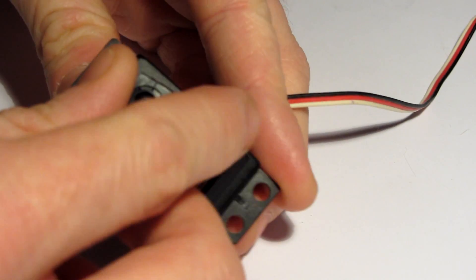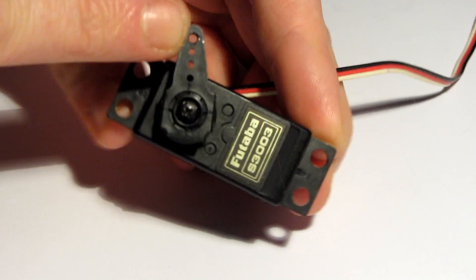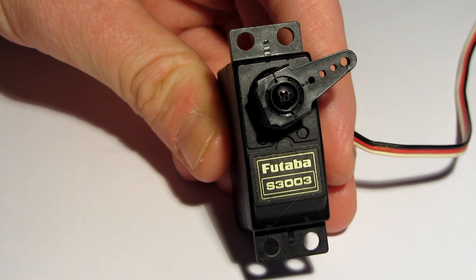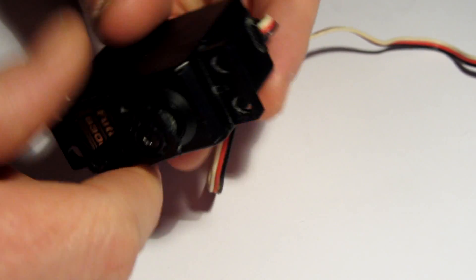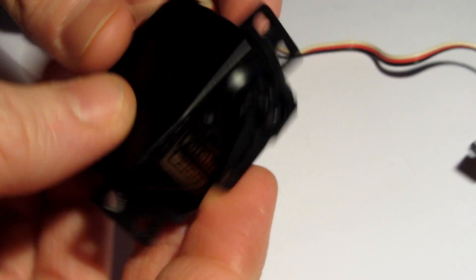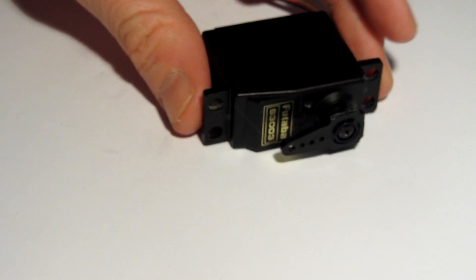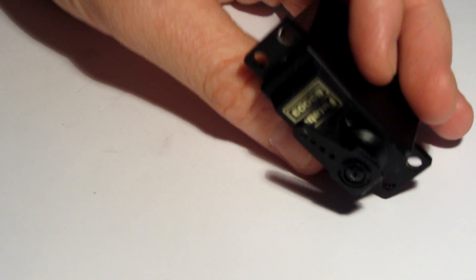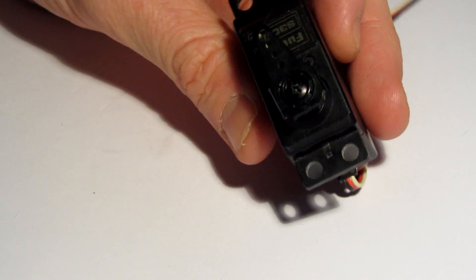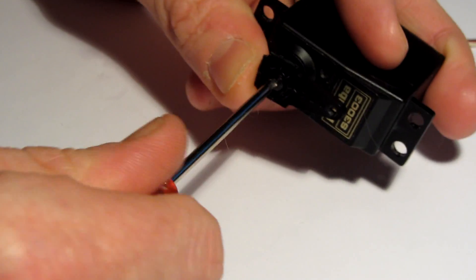Today we're going to modify a servo for continuous rotation. At the moment my servo only goes around to the two stops. I'm modifying a Futaba S3003 which I salvaged from an old plane. It looks very simple, so I'm making a video to show you how to make this into a continuous rotation servo. I'm not going to do the solder method; I'm going to do the gear modification method. I think it's easier and perhaps less prone to problems.